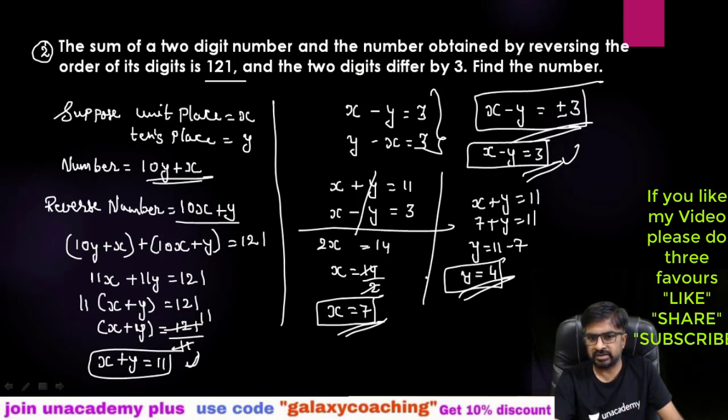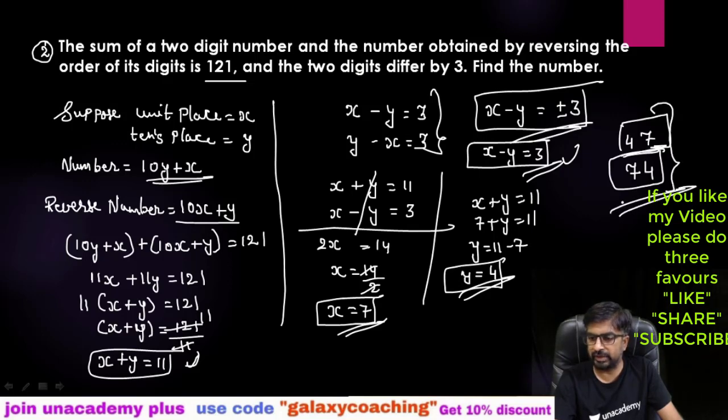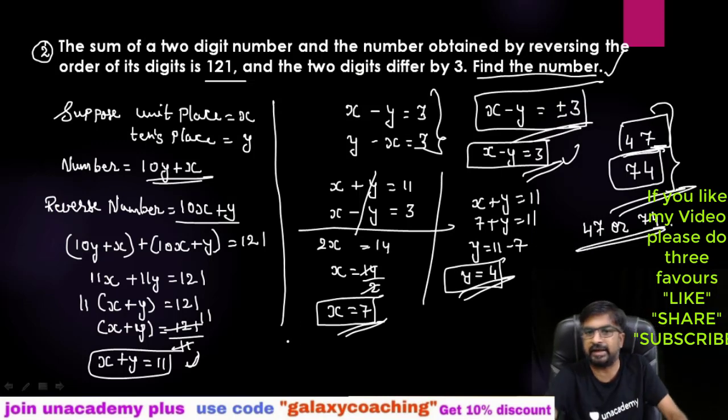Now you got x equals 7, y equals 4. So x equals 7, unit place is 7 and tens place is 4. So 47. But when you will take y minus x as 3, these digits will interchange. So it can be 74 also. So both these answers you need to write down. The number, the two digit number can be either 47 or 74. If you will write only 47 then your teacher can cut your marks guys. So please keep this in mind.